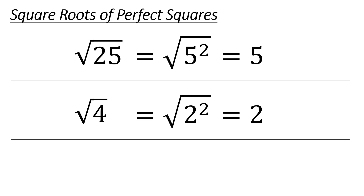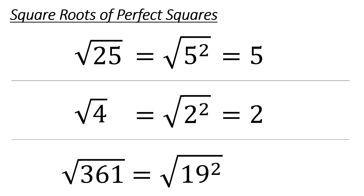Then we have the square root of 361. That one might take you a little bit longer, but it's going to be 19. So 19 times 19 is 19 squared, and the square root of a perfect square gives you that number. Take a look at that and soak it in for a moment.